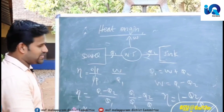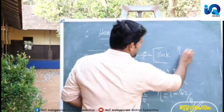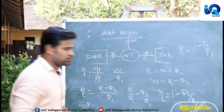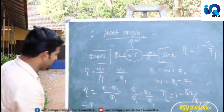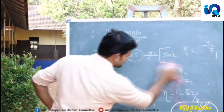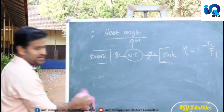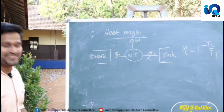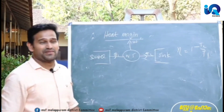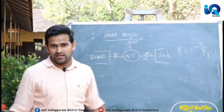At the temperature level, eta equals 1 minus T2 by T1, because Q is proportional to T. The reverse of the heat engine is called the refrigerator.